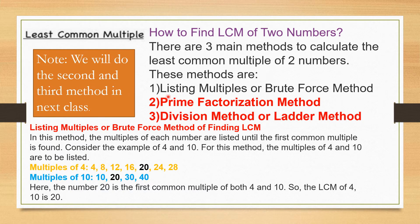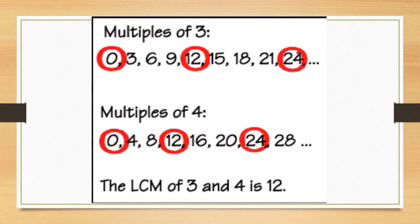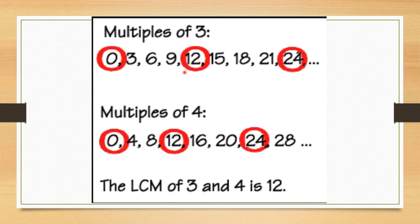We will do the second and third methods in the next class. For another example, find the LCM of 3 and 4. First write the multiples of 3, then write the multiples of 4. There are several common multiples — first there is 0, then 12, then 24, and several others. But mind you, don't take 0. The least common multiple is 12. Therefore, LCM of 3 and 4 is 12.